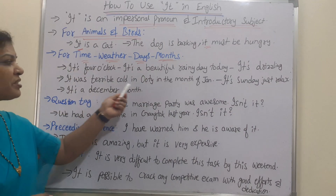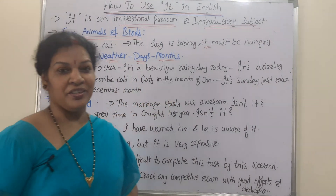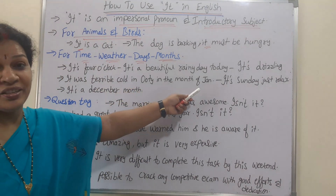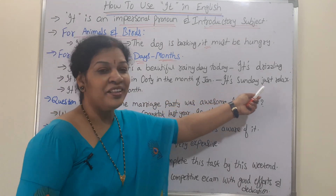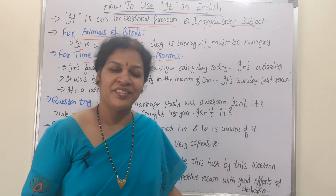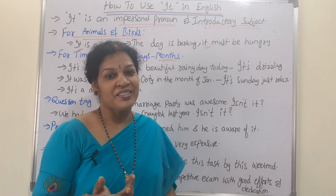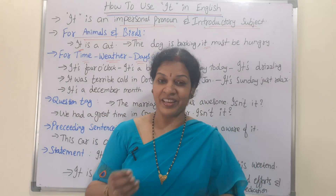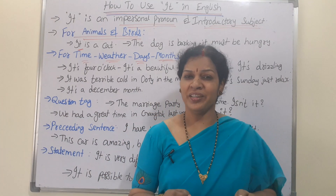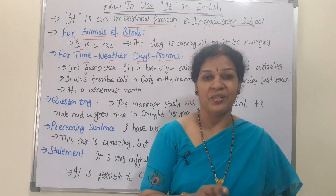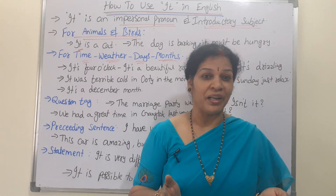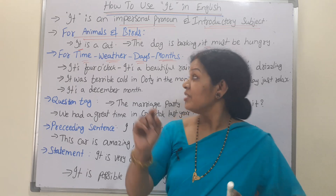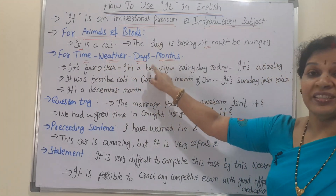Also: It was terribly cold in Ooty in the month of January. For days: It's Sunday, just relax. For months: It's December month. Another example — It's already October but still no vaccine. So we can use IT for time, weather, days, or months.